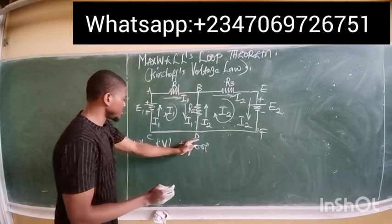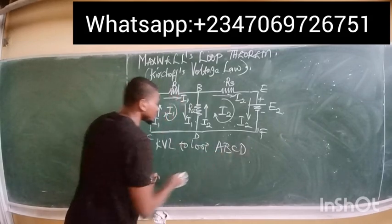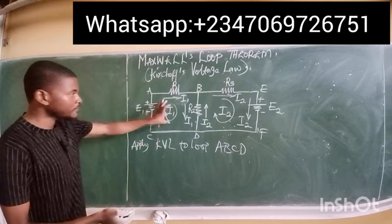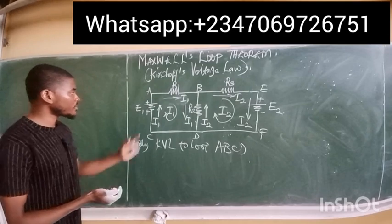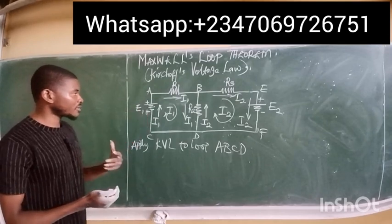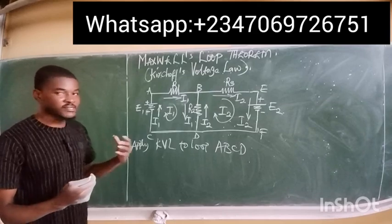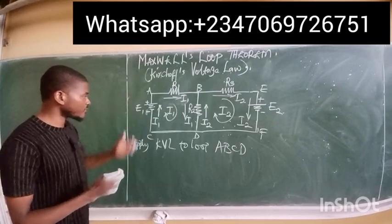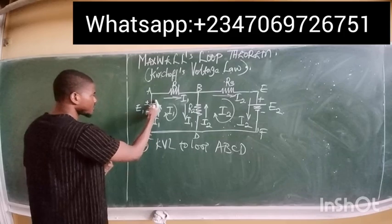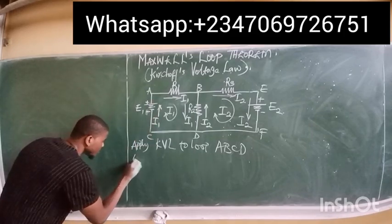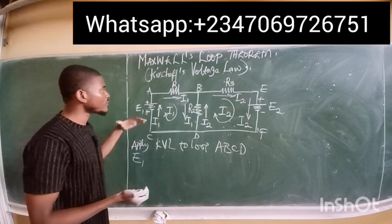Considering loop ABCD: from the definition, if a current flows from a negative terminal to a positive terminal there is always going to be a potential gain, because the current is increasing in size from negative to positive. So we have current i1 flowing through negative to positive terminal — this is simply +e1, it remains positive.